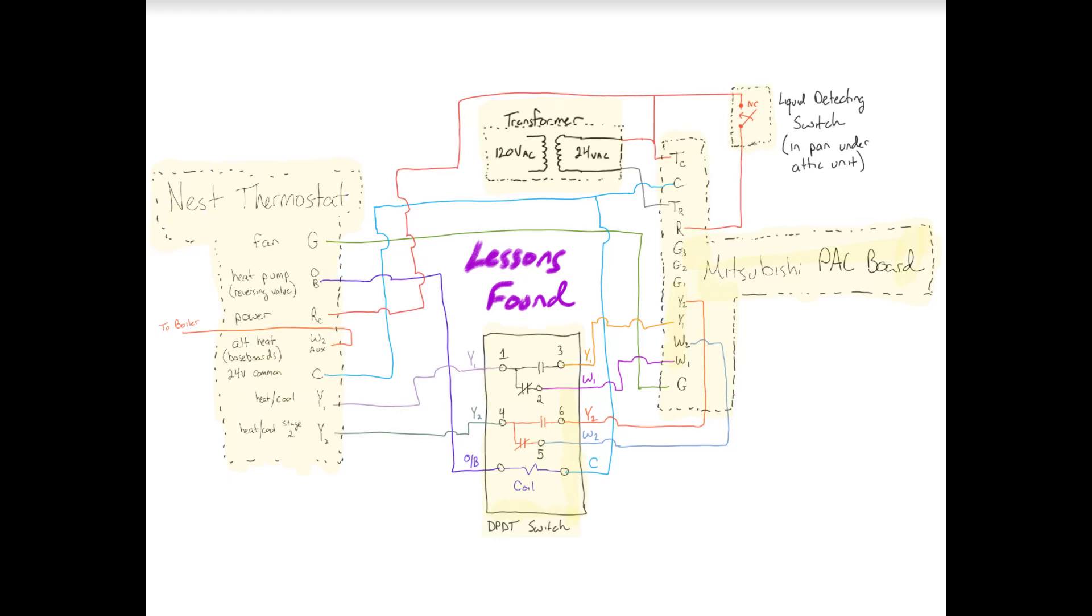Okay, so now let's look at the common. So that's that blue line right in the middle of the screen. You'll see the 24 volt common on the Nest thermostat. It connects to the C on the Mitsubishi PAC board, and it also connects to the other side of the double pole, double throw switch. So that's going to be the bottom of the double pole, double throw switch on the right side.